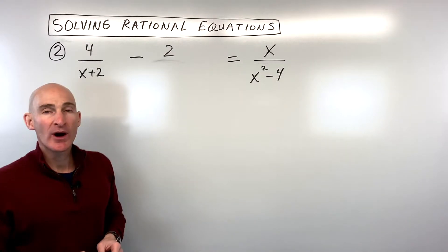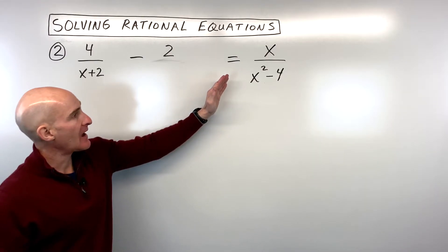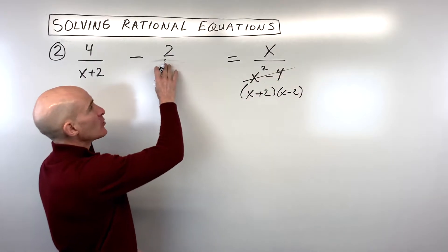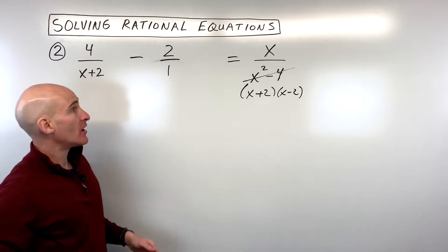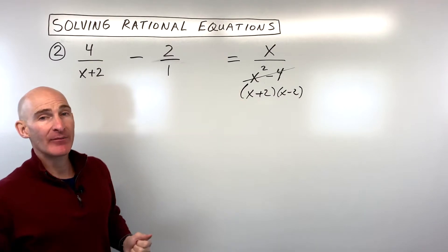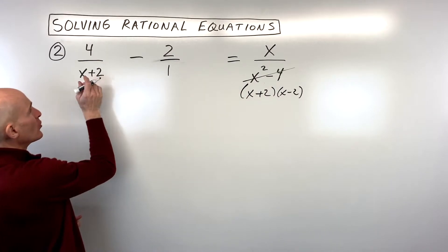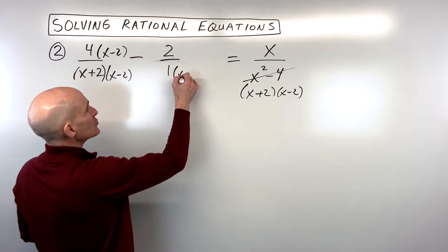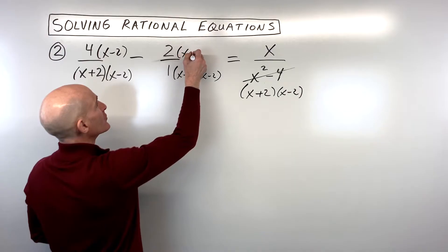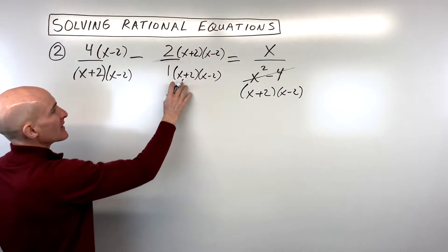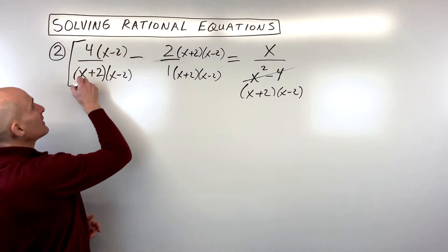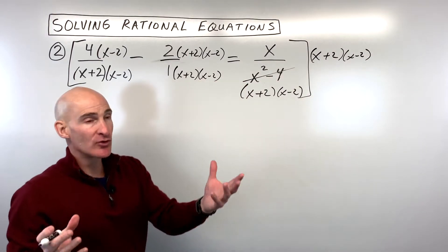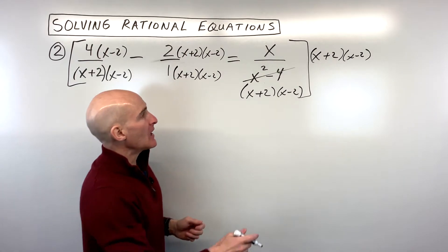Let's take a look at another example — see if you can do number 2 on your own. What I would do is factor the denominators as much as I can first. This is a difference of two squares: x plus 2 times x minus 2. This one you can think of as a fraction by putting it over 1, because anything divided by 1 is itself. Now when we look at all these denominators, we want to get a common denominator. We've got x plus 2, x minus 2. We only have an x plus 2 here, so we need an x minus 2 — multiply that to the numerator and denominator. Here we're missing both an x plus 2 and an x minus 2, so we multiply those both to the numerator and denominator. You can think of this as being over 1.